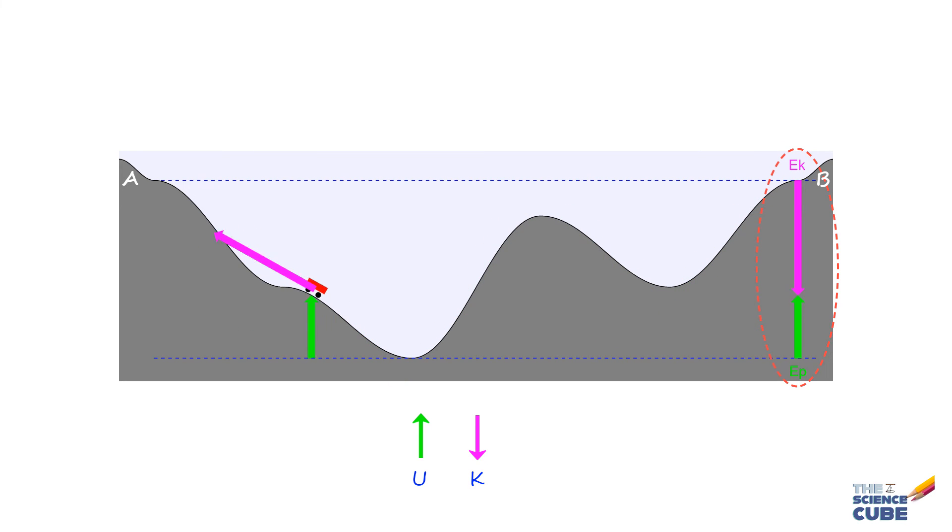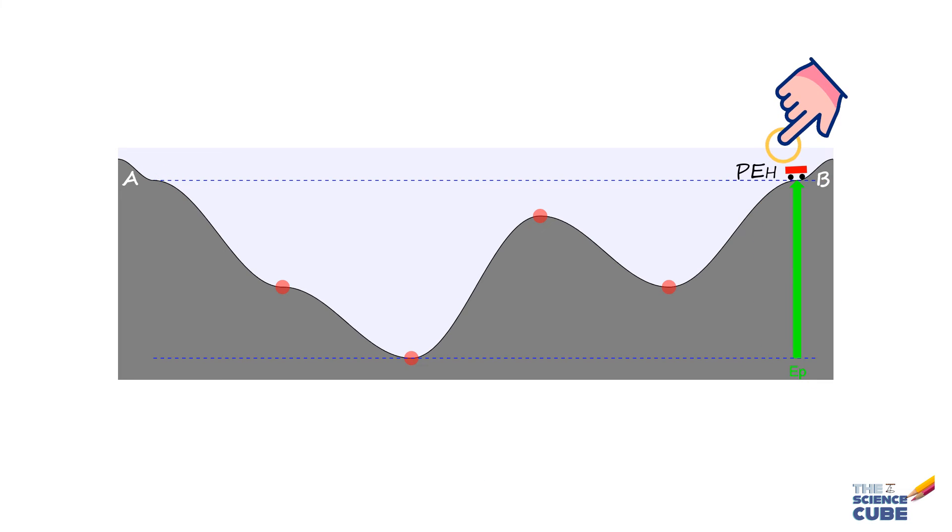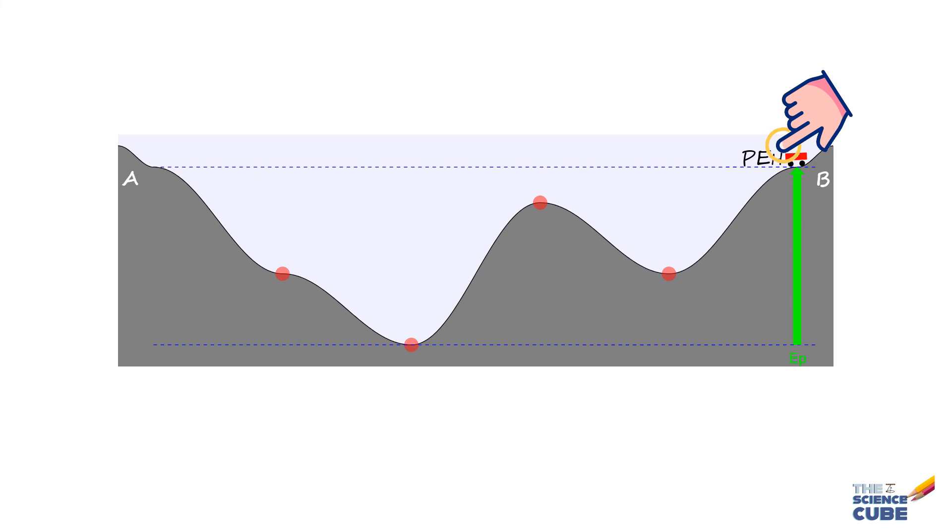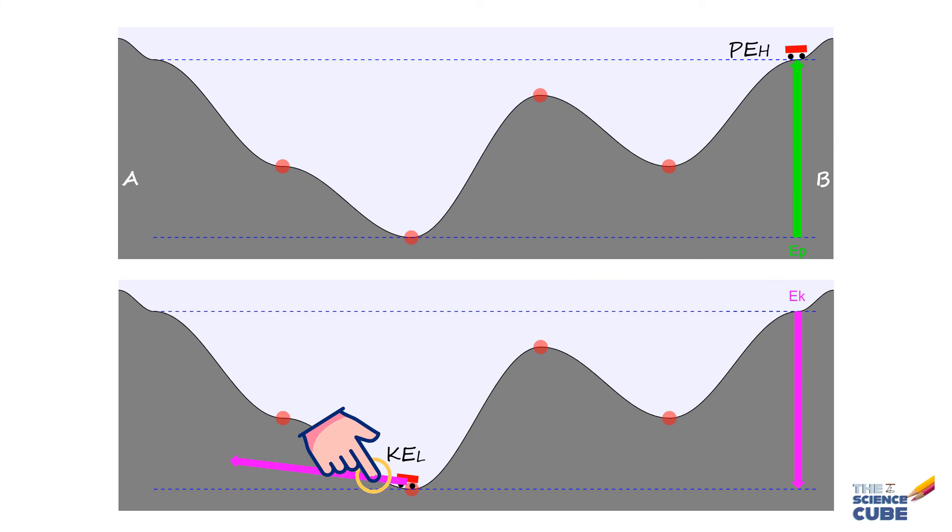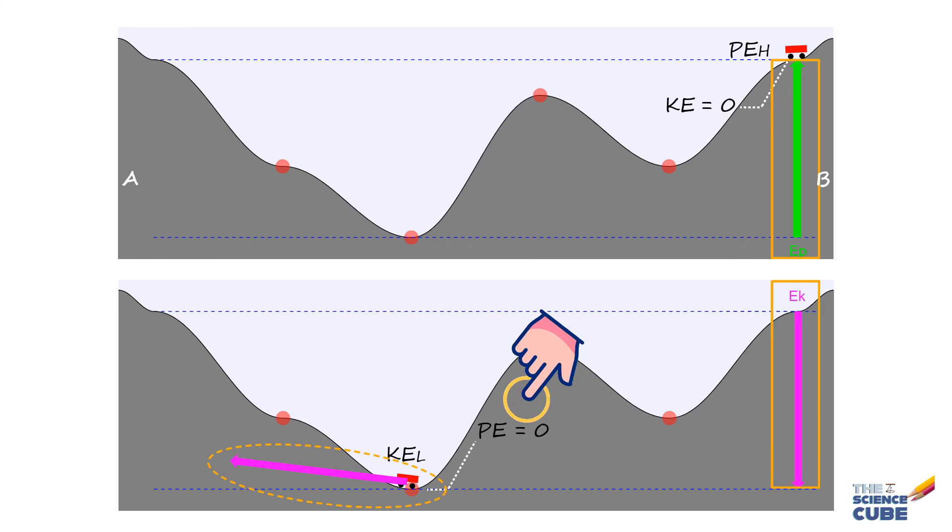In fact, if we know the potential energy of the car when it is at its highest point, we can say that that would be the car's kinetic energy at the lowest point. Simply because the kinetic energy at the top point is zero since it momentarily comes to rest. And therefore, this potential energy has to be the total energy. And here, at the lowest point, potential energy is zero. Therefore, the entire energy has to be kinetic energy.